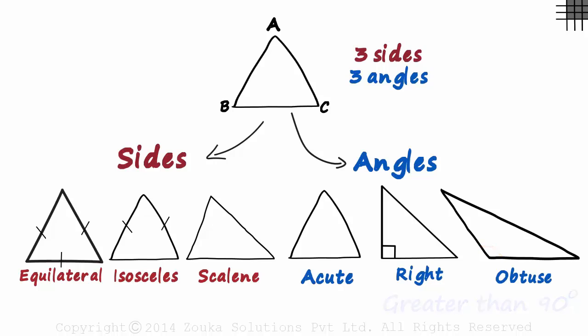Questions like, what if two angles are 90 degrees, or two angles are more than 90 degrees, are not valid. Those two cases are not possible as the sum of the angles of a triangle cannot be more than 180 degrees.